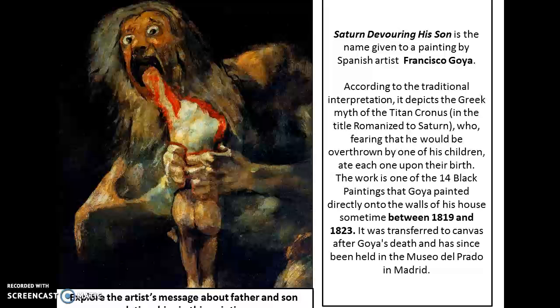Fearing that he would be overthrown by one of his children, he decided to eat each one up upon their birth. The work is one of the 14 black paintings that Goya painted directly onto the walls of his house sometime between 1819 and 1823. Applying the same questions here, the father and son relationship clearly does not exist — a father is not expected to cause his son any harm. He's supposed to be the protector, the provider, the supporter. And here we have a violent, monstrous creature devouring his son for his own power and greed.